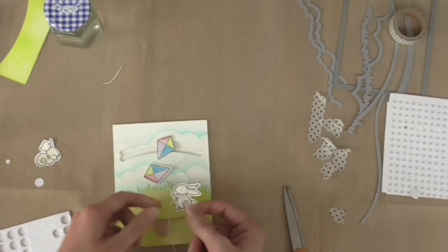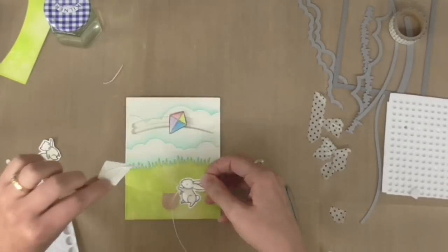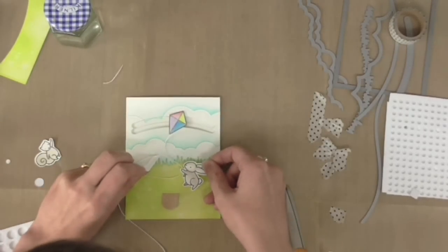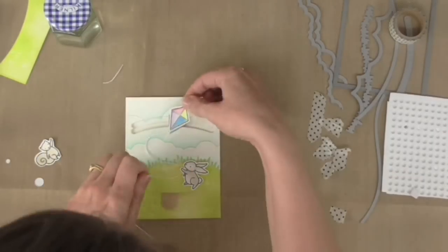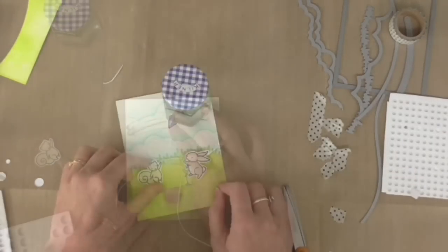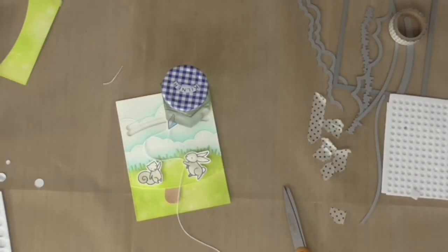On the other end of the string my little bunny is going to be holding it and my kite actually popped off so I had to stick my bunny down and then stick this back on with a little bit more glue and I put a heavy object on that while it dried.